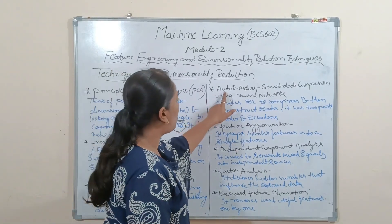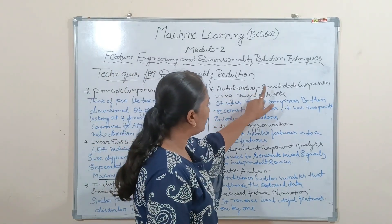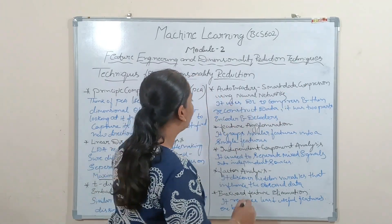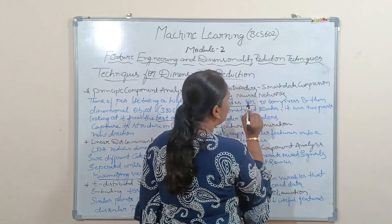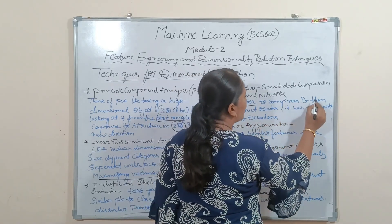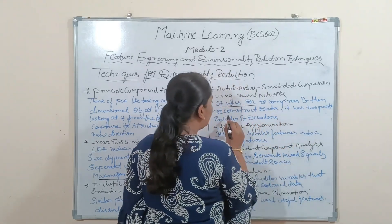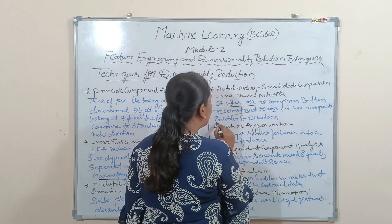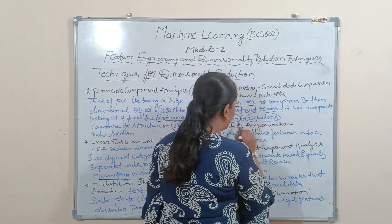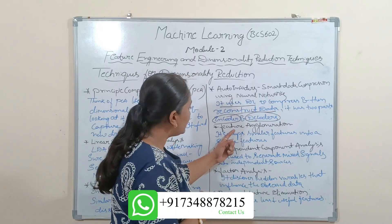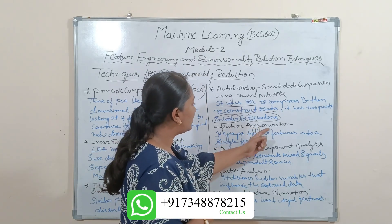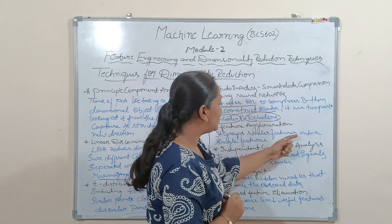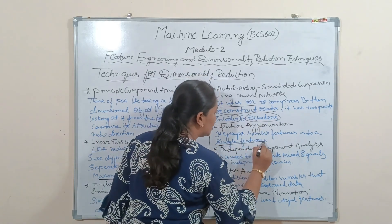The next technique is autoencoders — smart data compression using neural networks. It uses deep learning to compress and then reconstruct the data, and it has two parts: the encoder and the decoder. The next technique is feature agglomeration, which groups similar features into a single feature.